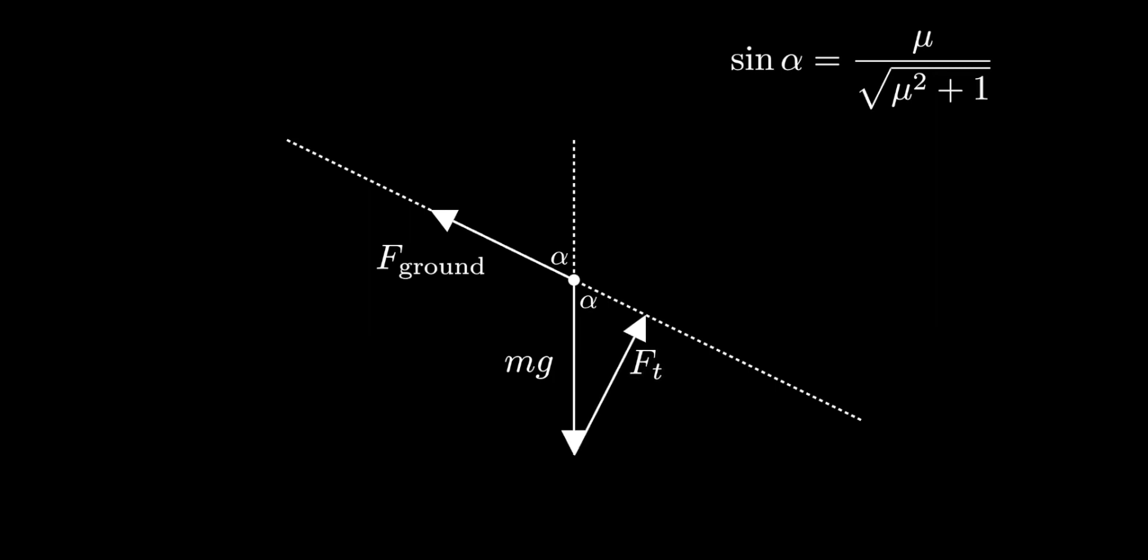Now to solve for Ft, we just need to perform some basic trigonometry to see that the hypotenuse of the triangle is mg. And the opposite side to α is Ft, so we can write Ft as mg sin α, which gives us the answer we had earlier.